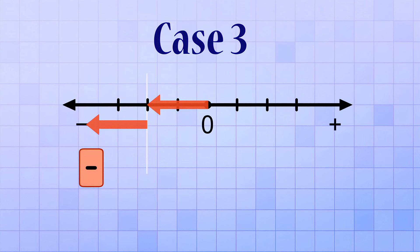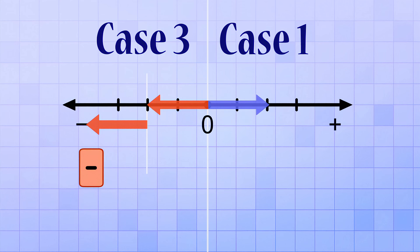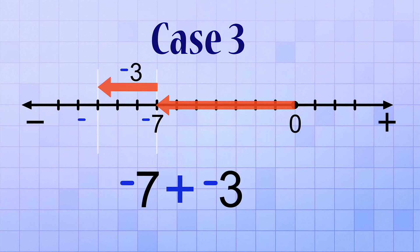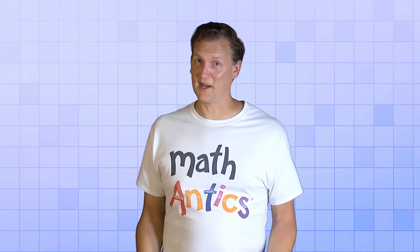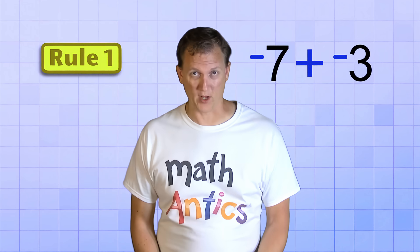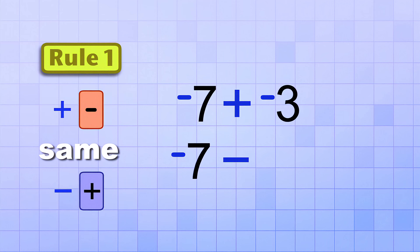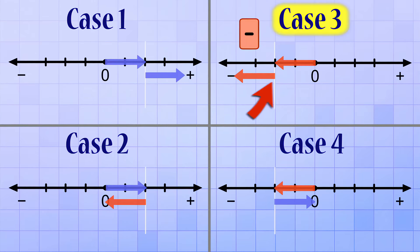In case 3, you start with a negative number and you make it more negative — really just the opposite of case 1. For example, negative 7 plus negative 3: you start with negative 7 and make it even more negative by adding negative 3, which gives you negative 10. Thanks to rule number 1, this problem could also be written as negative 7 minus 3, since adding a negative 3 is the same as subtracting 3. But either way it's written, you're starting with a negative number and making it even more negative. Because of that, your answer will always be negative for case 3, since you stay on the negative side of the number line.